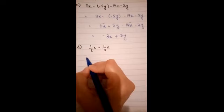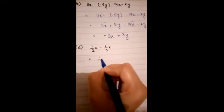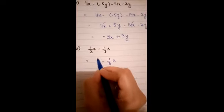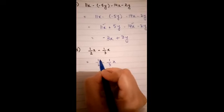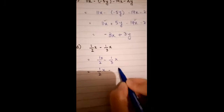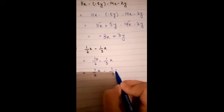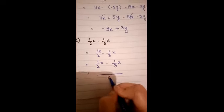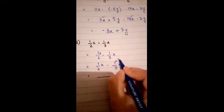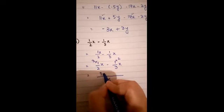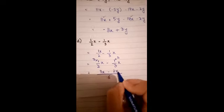Now the next one is 1 over 2x minus 3x. Now we put the, now 6 will be common. 3 times 2 is 6, 2 times 3 is 6. 3x minus 2x.